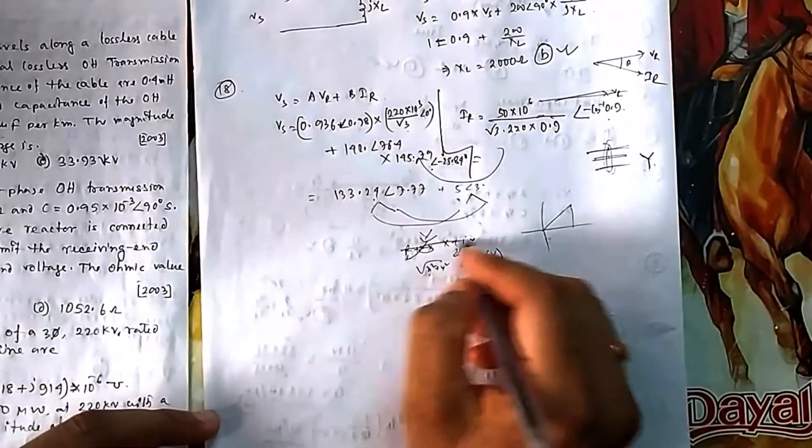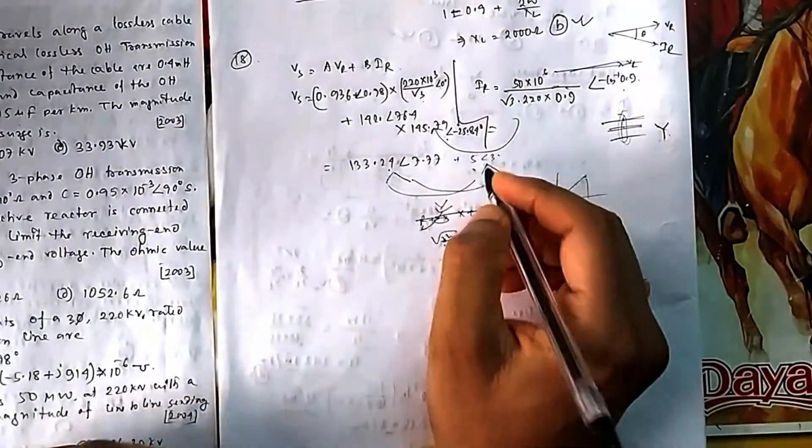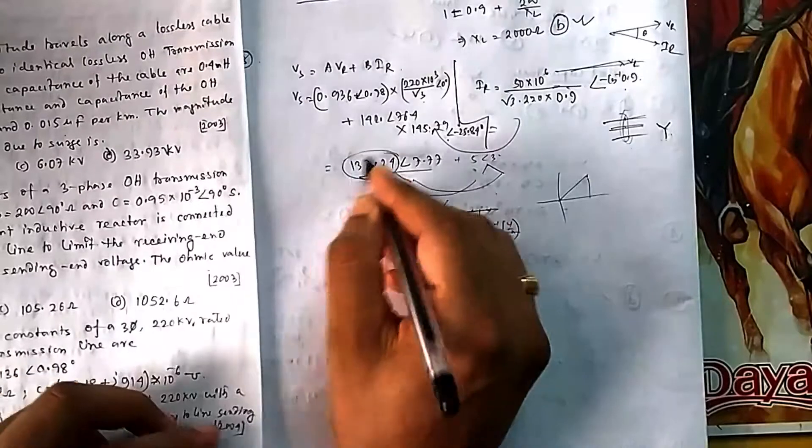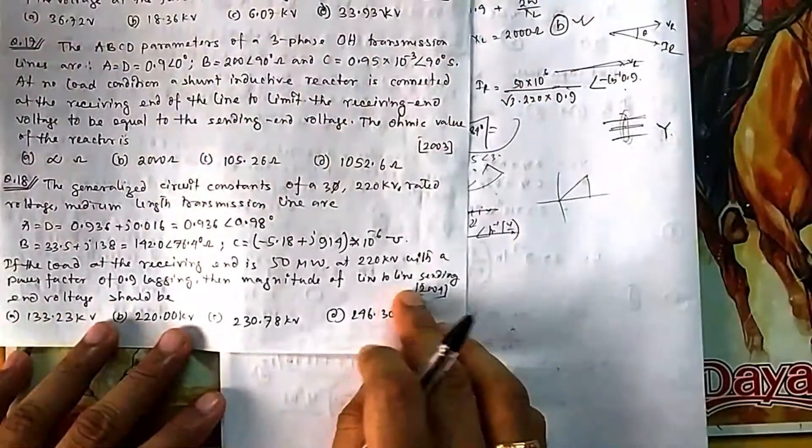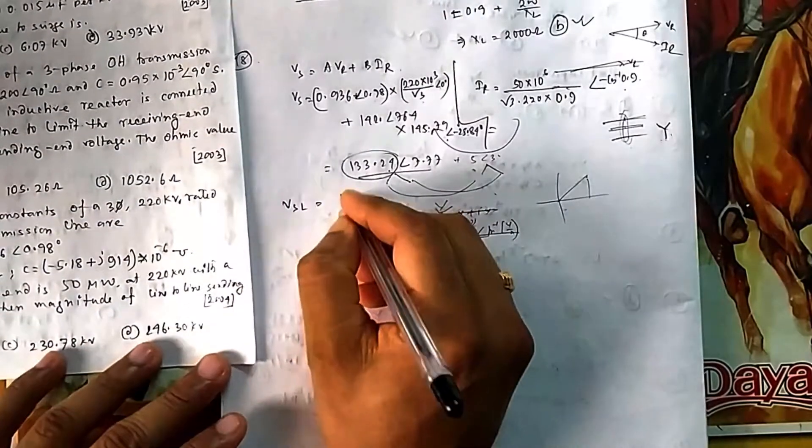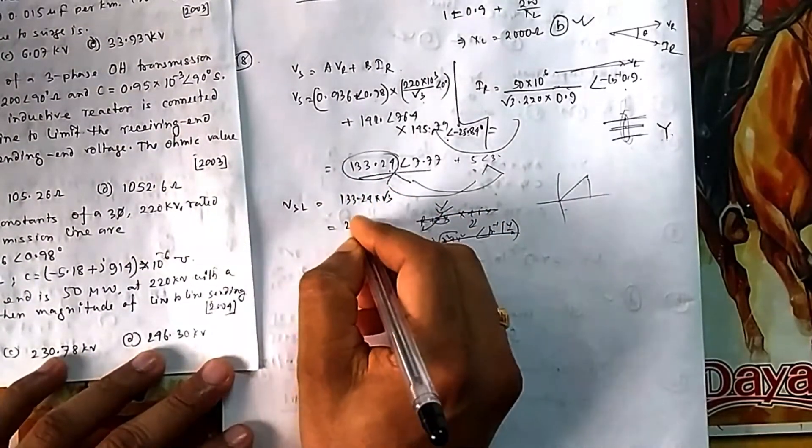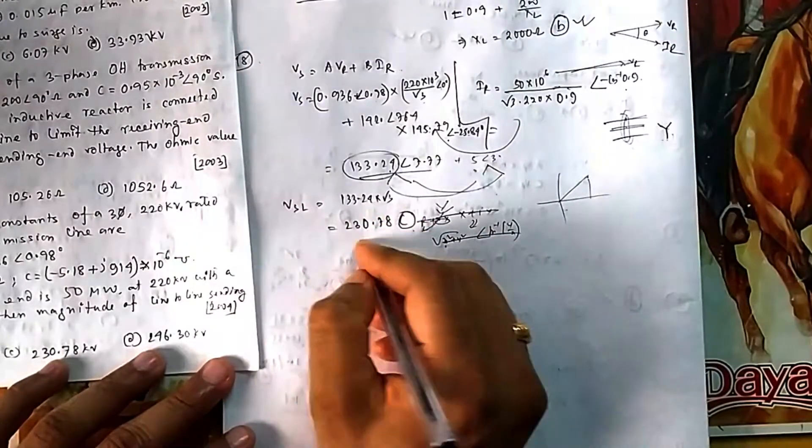When writing tan inverse, be careful about which quadrant it's in. Check the complex number videos and basic lectures where I've discussed converting rectangular to polar and polar to rectangular. I'll give a link if needed. This is Vs phase voltage, but they asked for line-to-line voltage. So that will be 133.24 × √3 = 230.78. That is option C.